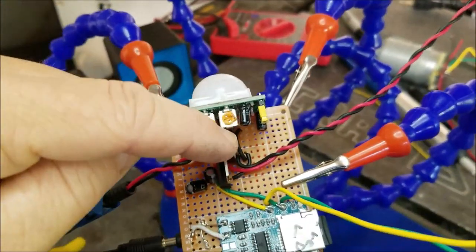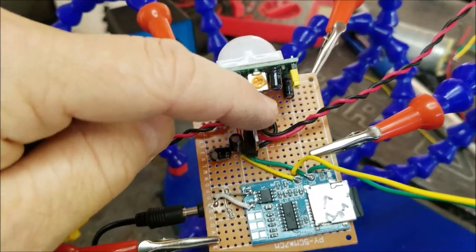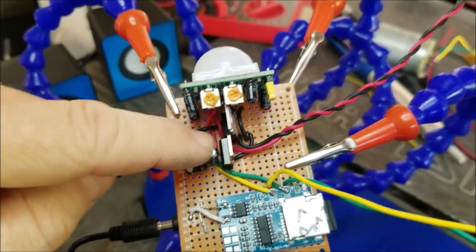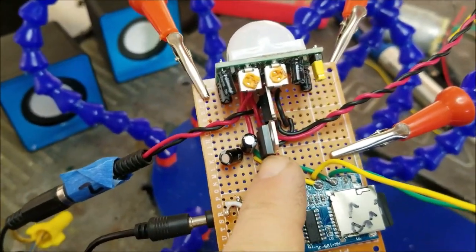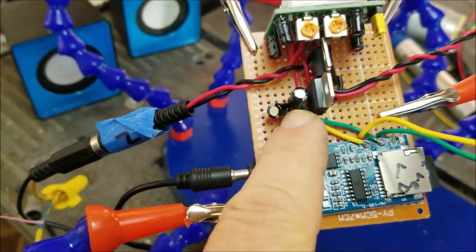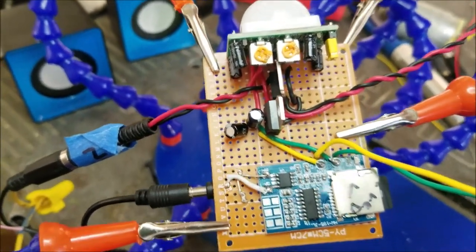Then the same TIP-31 output turns on and off, switches on and off a 5 volt regulator, which is a 7805 transistor and two 100 microfarad capacitors.